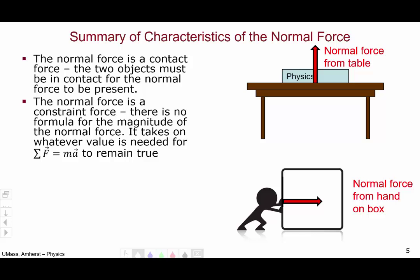The normal force is also a constraint force, discussed in your categorization of forces video. This means that there's no formula for the magnitude of the normal force. It takes on whatever value is needed to keep Newton's second law true.